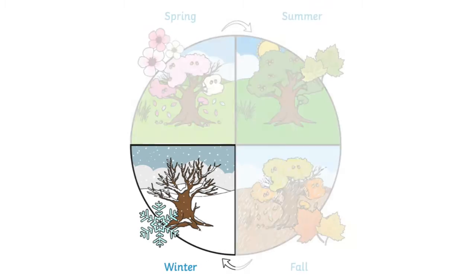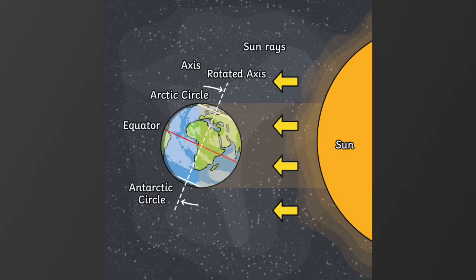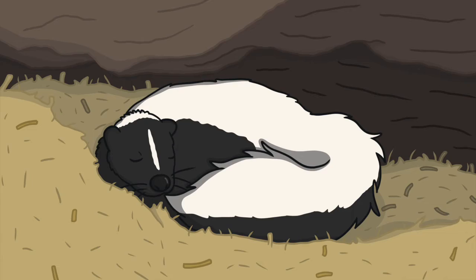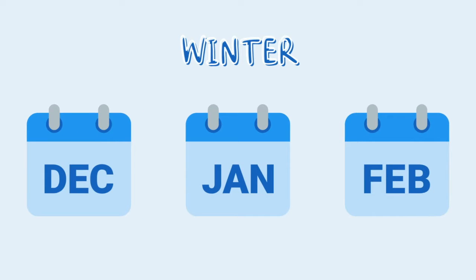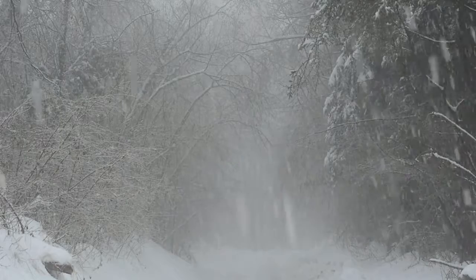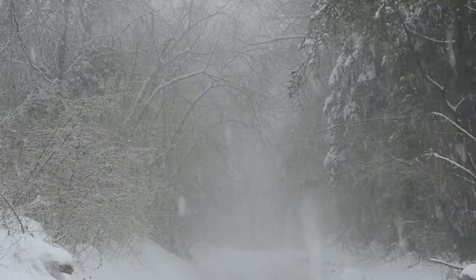Winter comes after autumn and before spring each year. During this season, the axis of the Earth is turned away from the sun, so the nights become longer and the animals start their hibernation. Winter months are December, January, and February and are the coldest months of the year. In some places of the United States, it's common to get extreme snowfalls and blizzards.